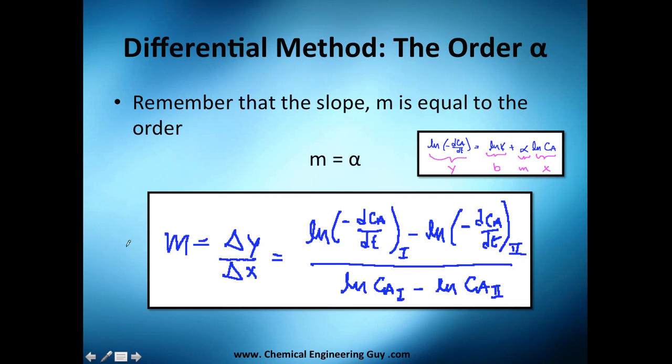That's the order. We're going to use the difference of y, which is essentially the natural logarithm of any value, let's say value one, minus the natural logarithm of that second value. This is the y-axis, so we need to find also the x-axis, which is natural logarithm of the concentration of the first point minus the natural logarithm of the concentration of the second point.